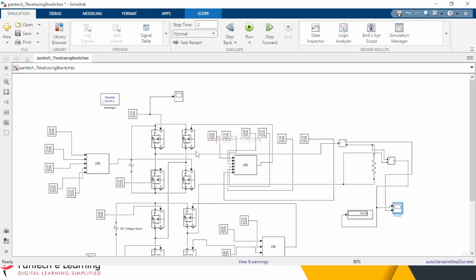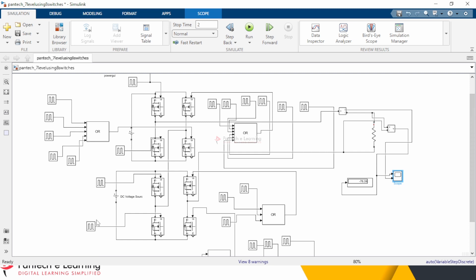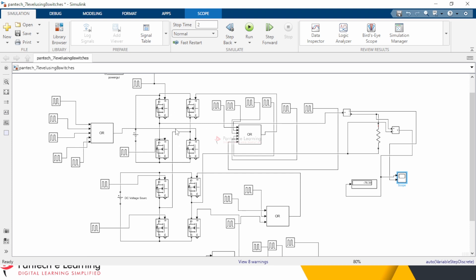This is our overall simulation model of a seven-level inverter using 8 switches. So, for these 8 switches, we need a pulse generator. We only give the pulse to all the 8 switches. So, here you have to see the 8 switches. For the 8 switches, we need a pulse generator. Now run this simulation.